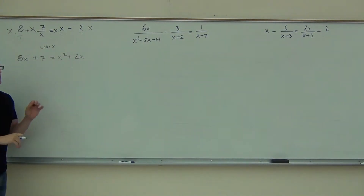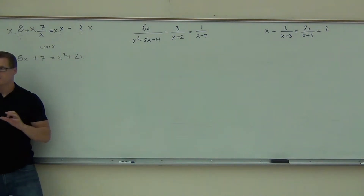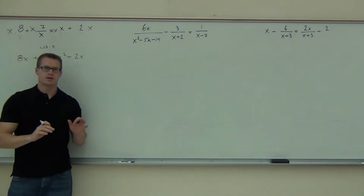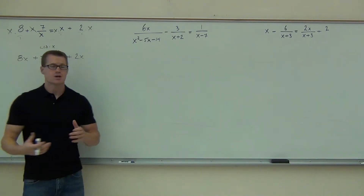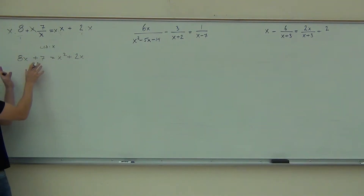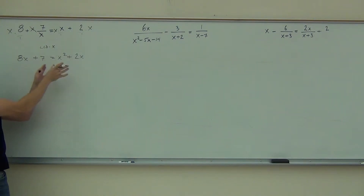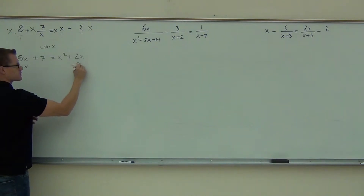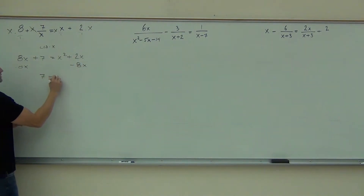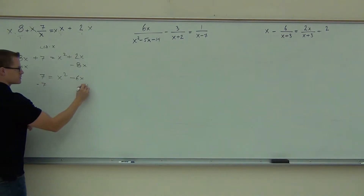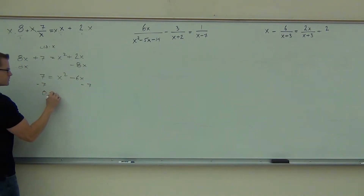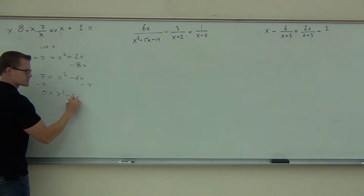Now, do we solve this like it is or do we have to get everything to one side and zero on the other side? Yeah, got to get zero. Otherwise the factors aren't going to make a difference. So we're going to move the right to the left — minus 8X. So 7 equals X squared minus 6X. We'll subtract 7.